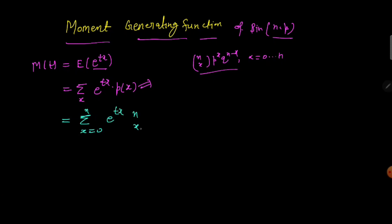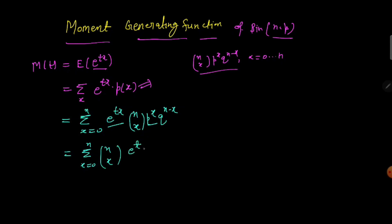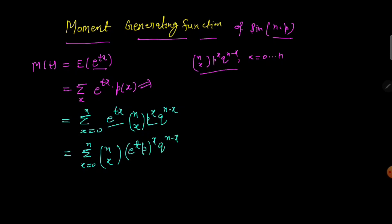We have nCx times p to the power x and q to the power n minus x. Now we can take the e to the power t and p together, so we get the sum from x equals 0 to n of nCx times e to the power t times p, all to the power x, times q to the power n minus x.